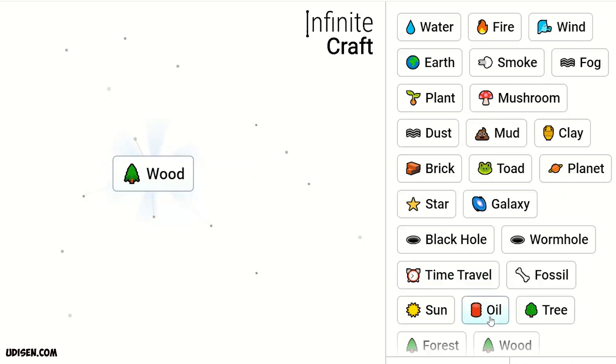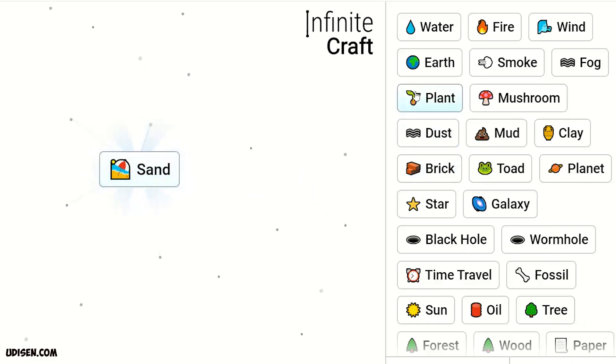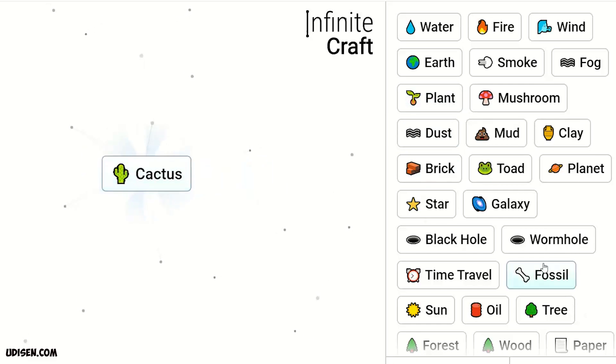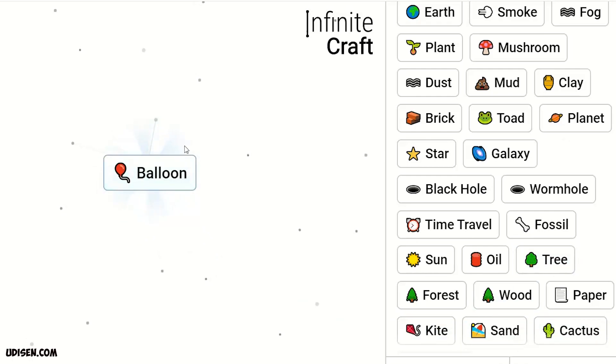Forest and tree makes wood. Wood and tree makes paper. Paper and white makes kite. Leave kite here. Then combine two dust makes sand. Sand and plant makes cactus. Cactus and kite makes balloon. Balloon and oil makes pop. Leave pop here.